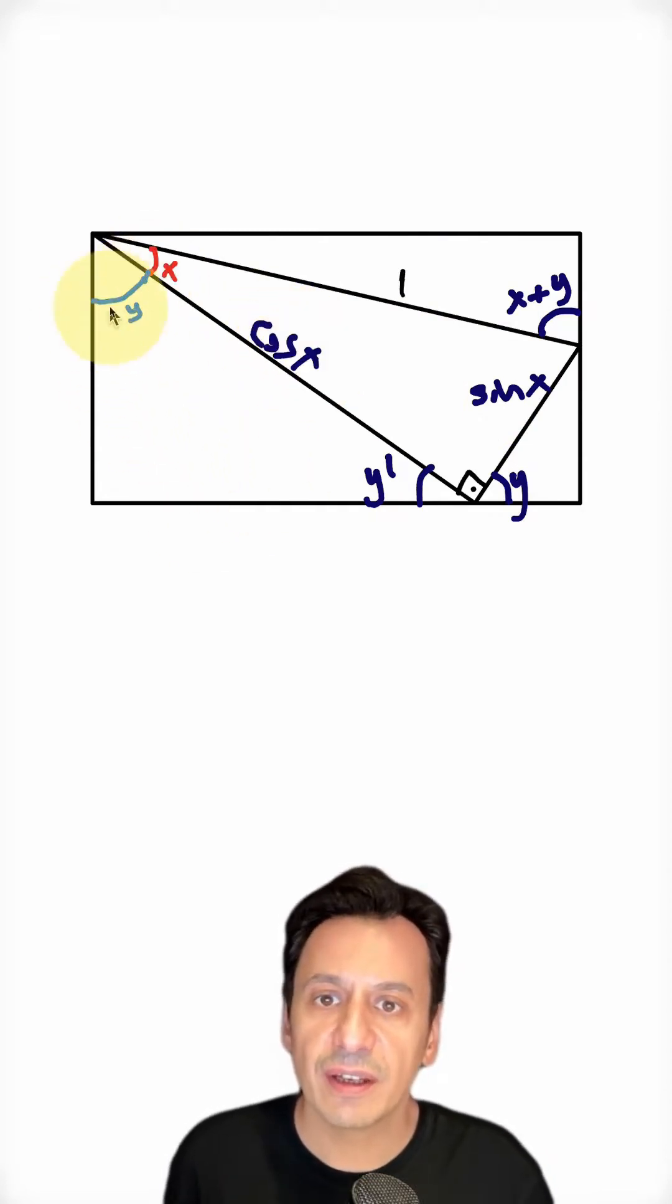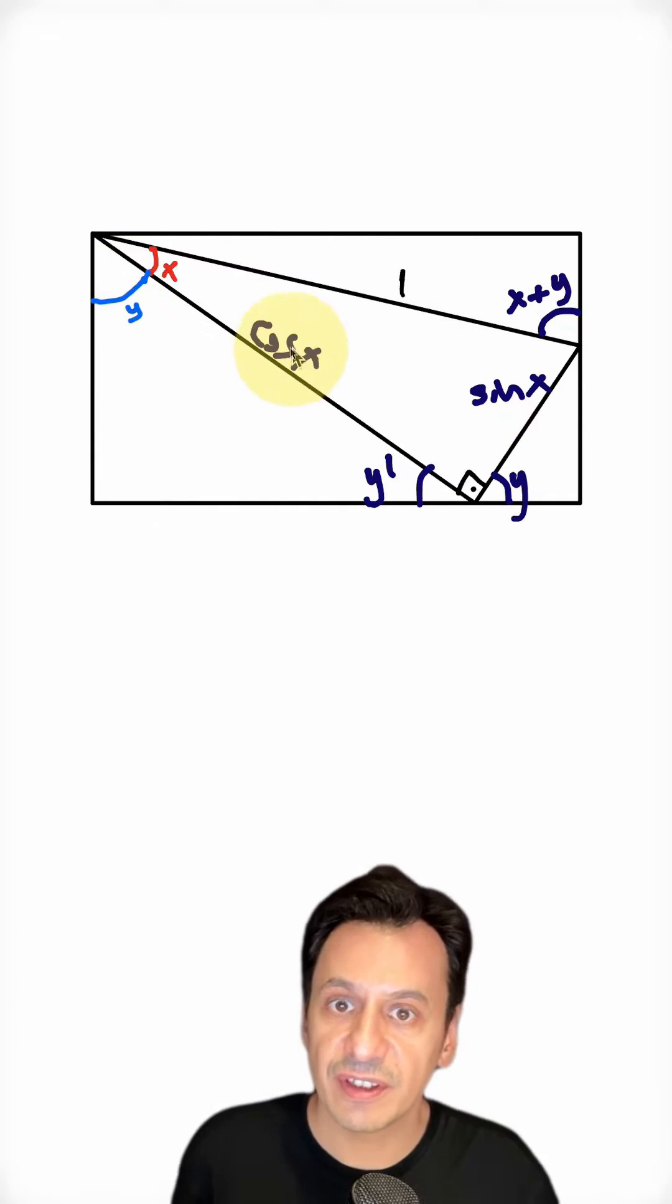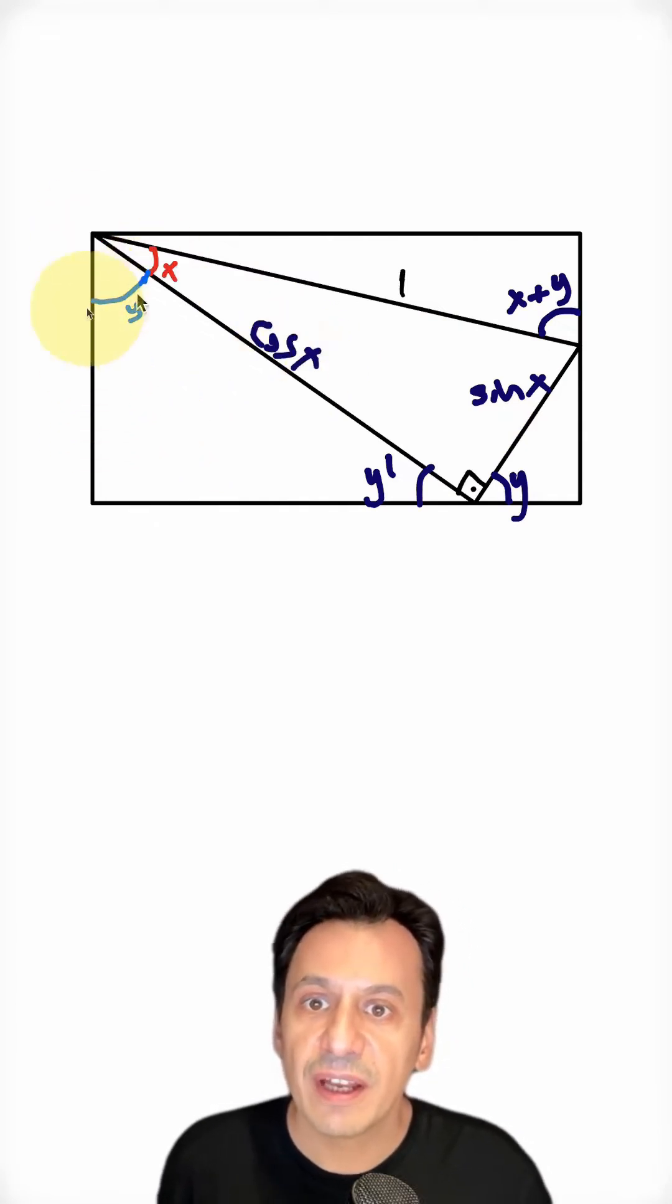Now, I see the angle y here and my hypotenuse here is cosine x. To find the adjacent side of y, I need to multiply cosine x by cosine y. Let's write that down.